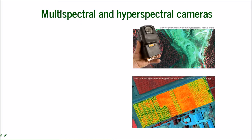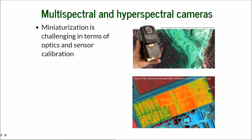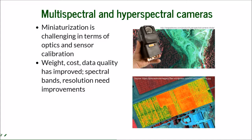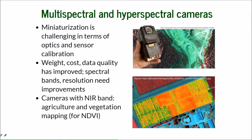When it comes to information beyond the RGB bands, we come into multispectral and hyperspectral cameras. This is still a challenge because more sophisticated technology is involved, and miniaturization is challenging in terms of optics and sensor calibration. There is still a need to balance weight, cost, and data quality. Cameras with a near-infrared band are cheaper and lighter, and they are widely used for agriculture and vegetation mapping — for example, for NDVI calculations.